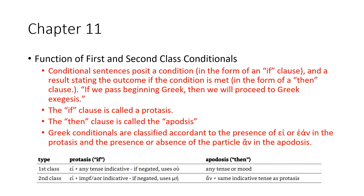Function of first and second class conditionals. Conditional sentences posit a condition in the form of an 'if' clause and a result stating the outcome if the condition is met in the form of a 'then' clause — for example, 'If we pass beginning Greek, then we will proceed to Greek exegesis.' The 'if' clause is called the protasis. The 'then' clause is called the apodosis. Greek conditionals are classified according to the presence of ei (εἰ) or ean (ἐάν) in the protasis and the presence or absence of the particle an (ἄν) in the apodosis.